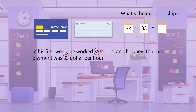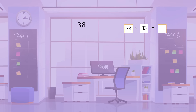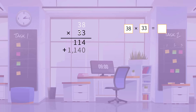Now, what we need to do is find the product of 38 times 33. This is a two-digit multiplication, and by using column multiplication, we find partial products 114 and 1,140. We find the final product is 1,254. Jason was paid $1,254 for his first week in the company.